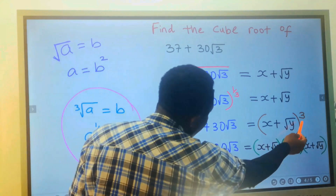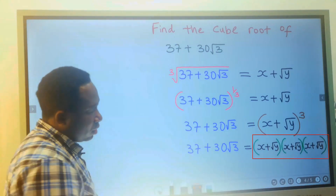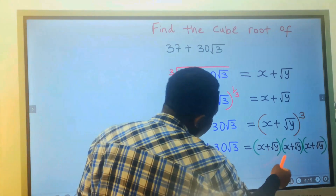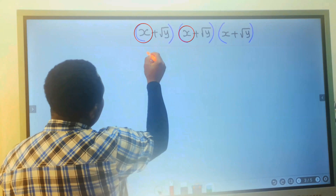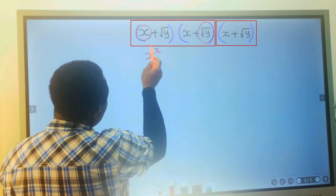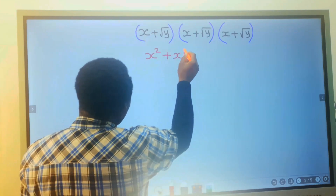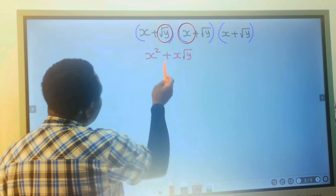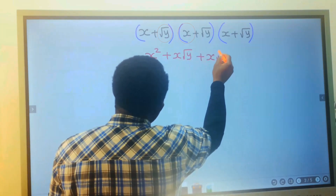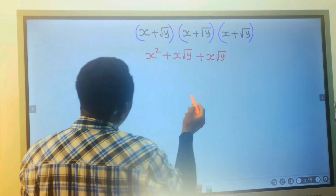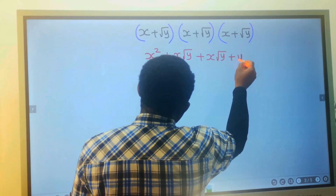This to the power of 3 means we're going to open this bracket 3 times. We're going to expand this bracket by distribution. x times x will give you x squared. x times the square root of y will give you x multiplied by the square root of y. The square root of y multiplied by x gives x multiplied by the square root of y. The square root of y multiplied by the square root of y gives y.